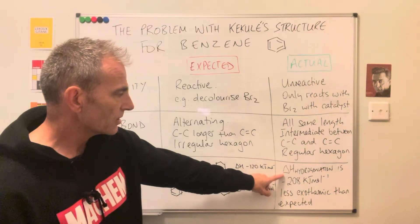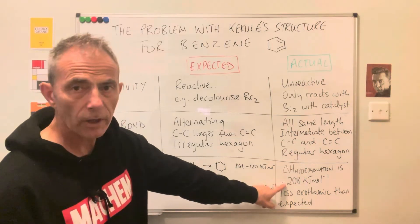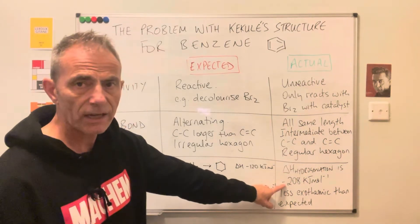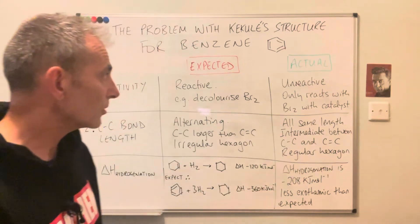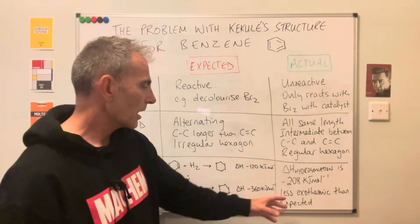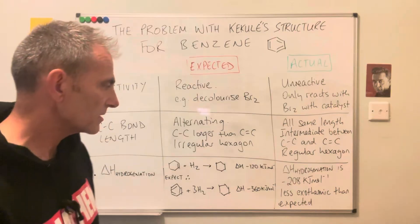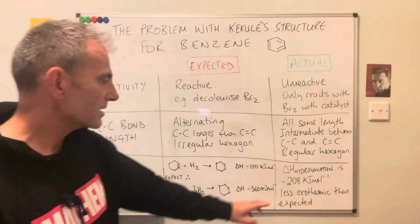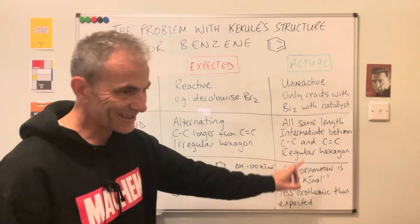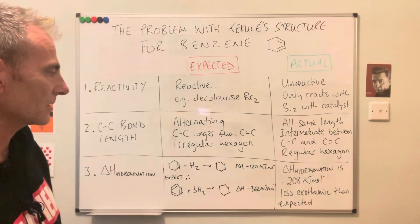When they measured it, they found the enthalpy change of hydrogenation was lower — it was −208 kilojoules per mole. So the enthalpy change of hydrogenation of benzene is less exothermic than expected.